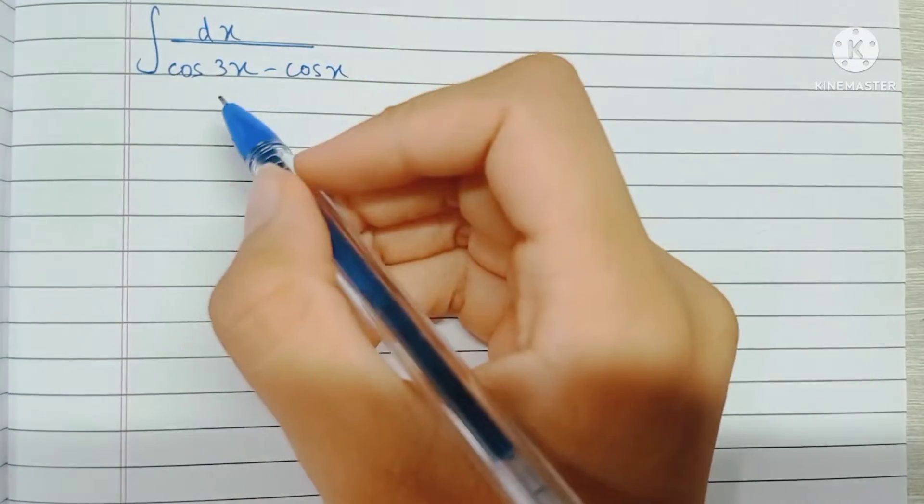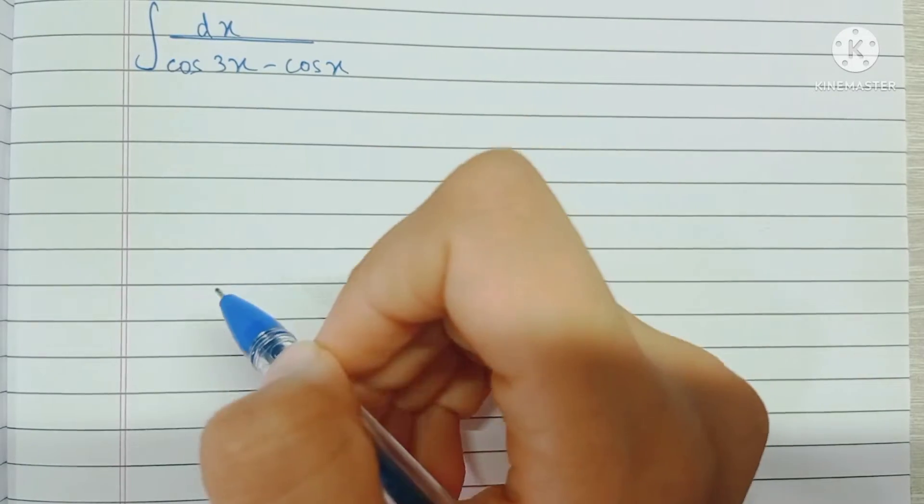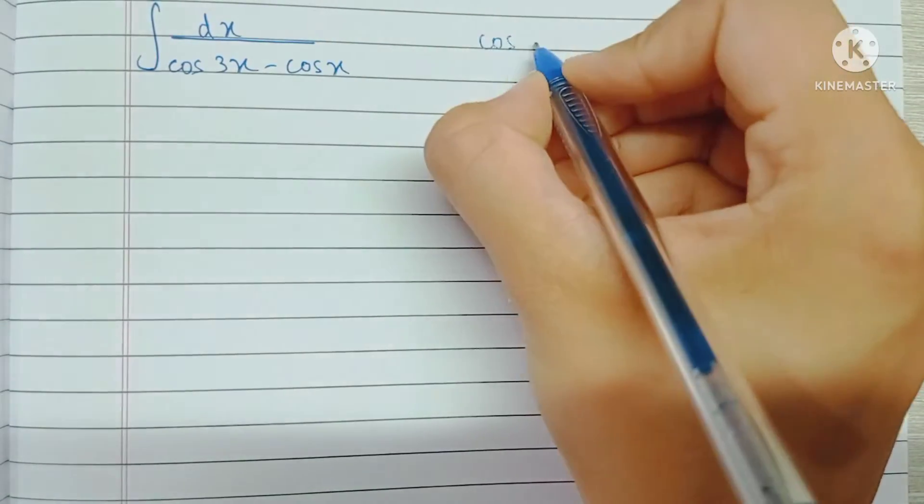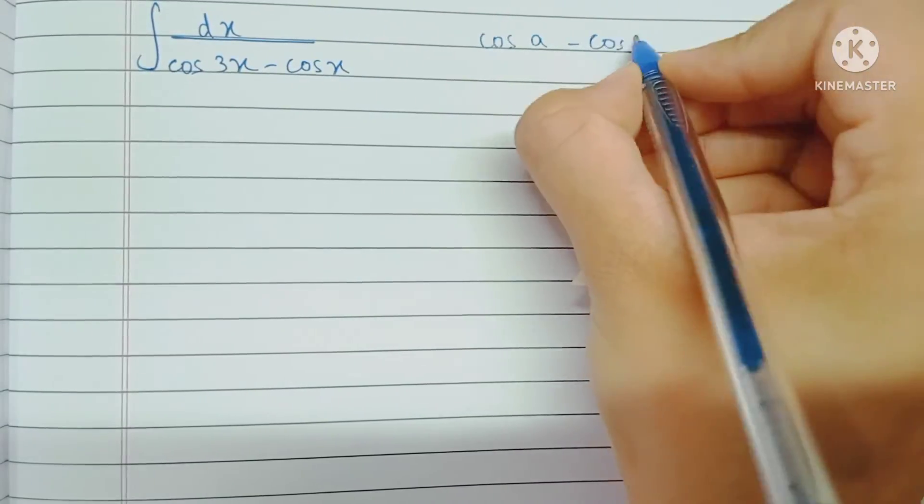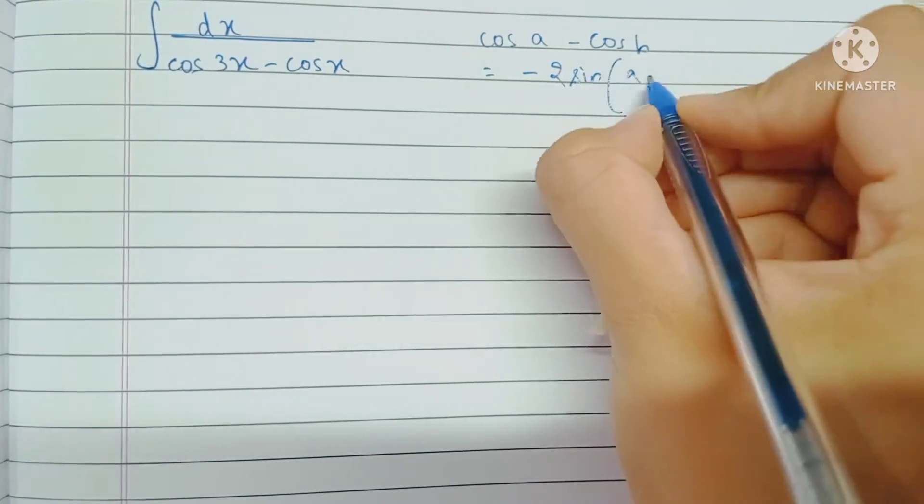Hey guys, let's solve this question: the integral of dx by cos 3x minus cos x. First, we're going to use the formula cos a minus cos b, which is equal to minus 2 sine a plus b by 2 into sine a minus b by 2.